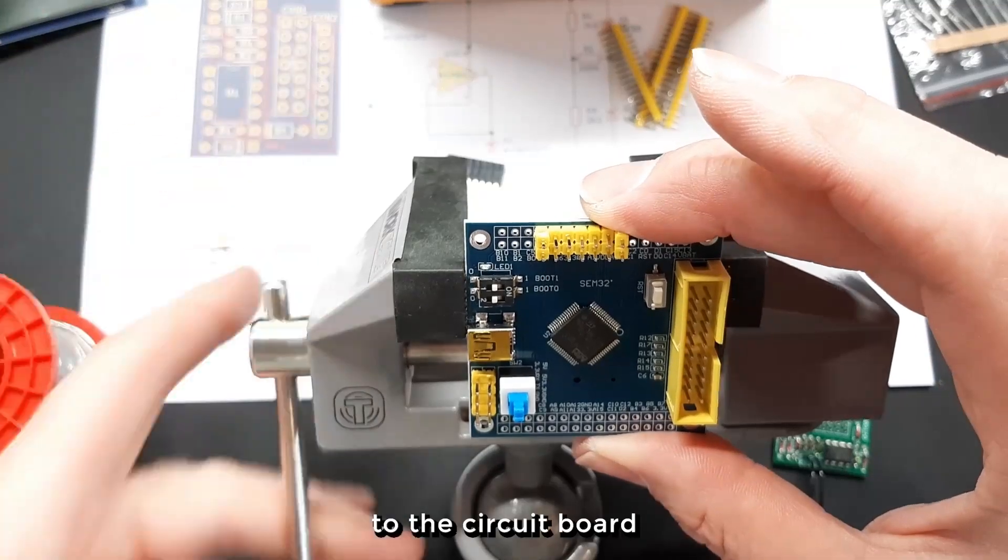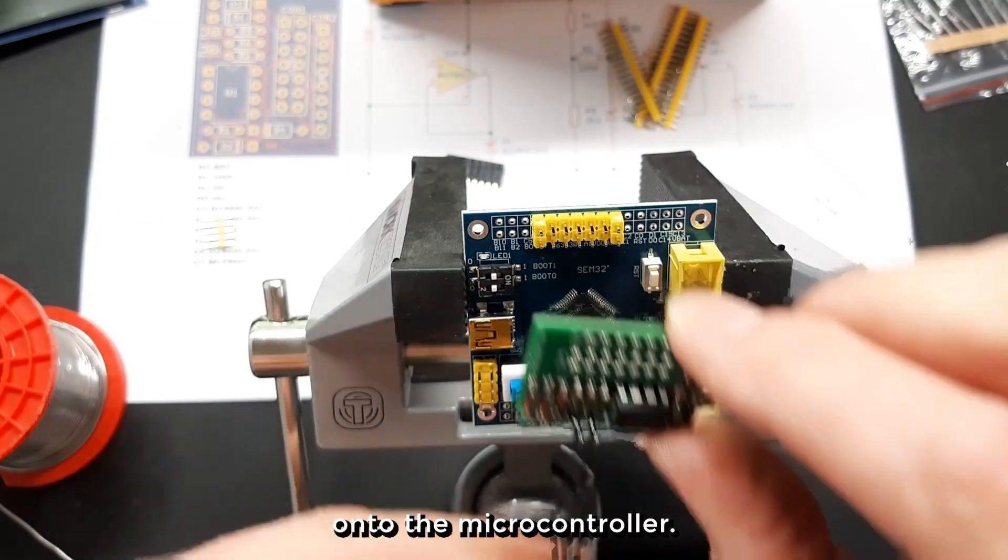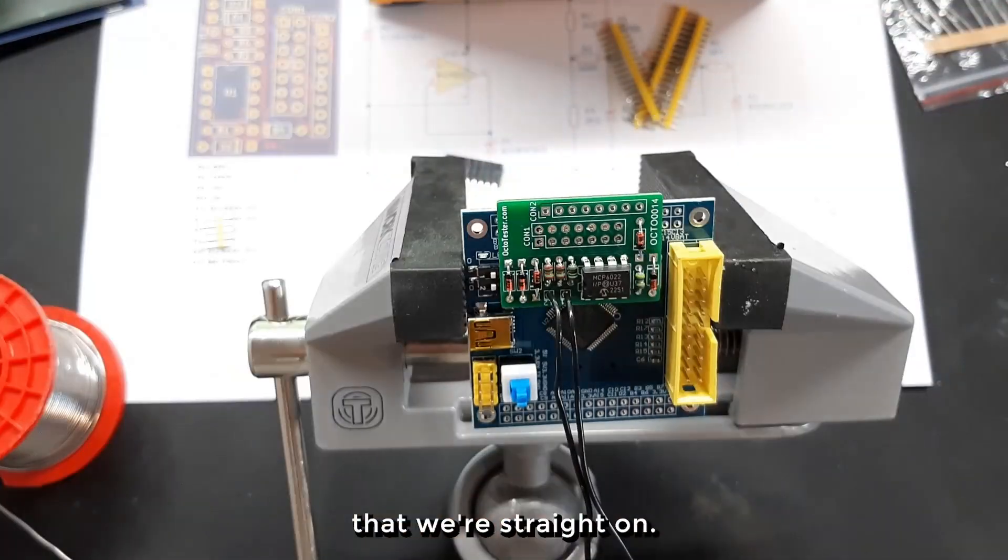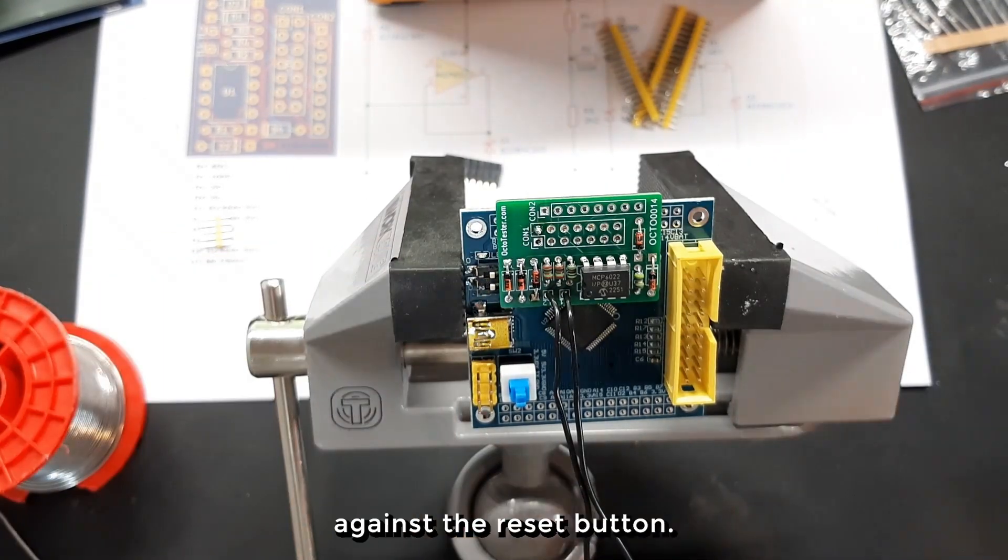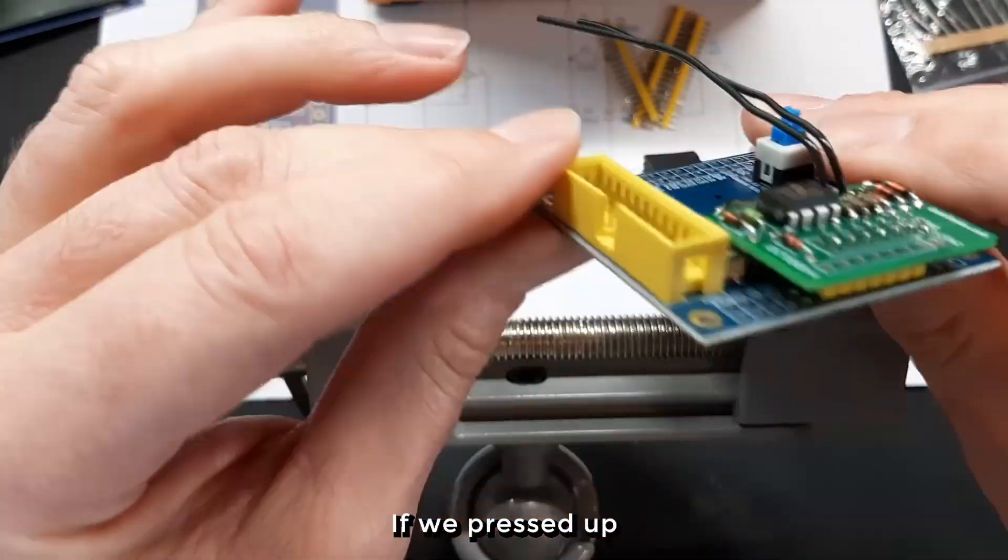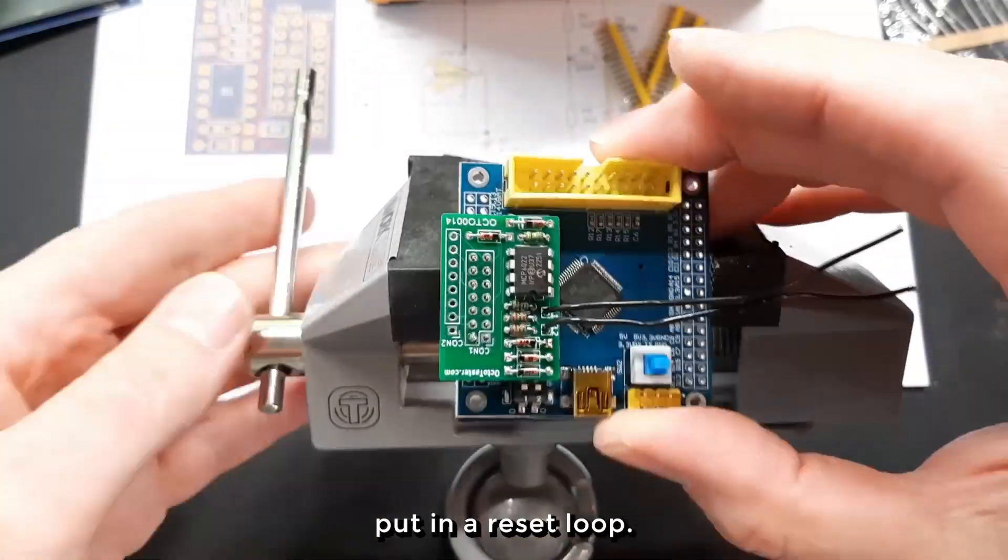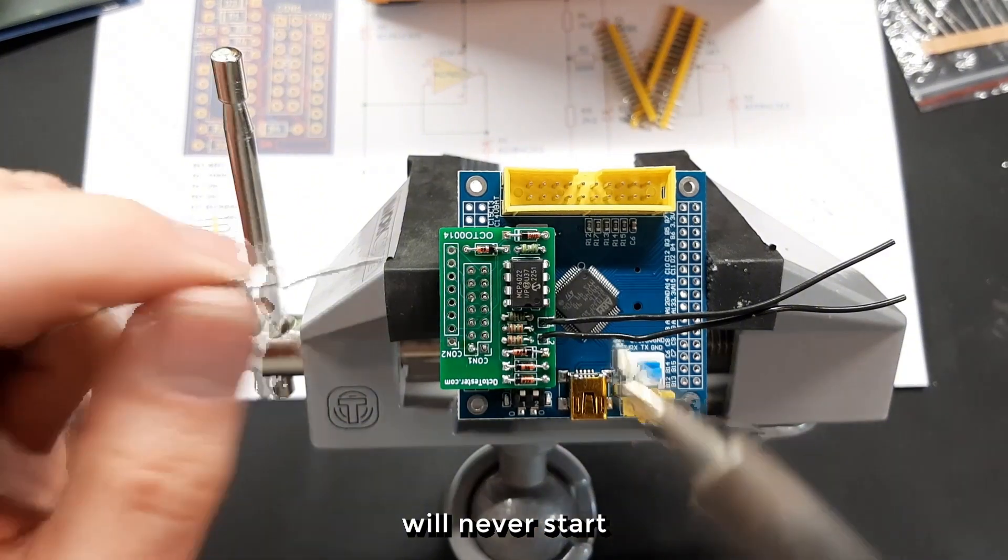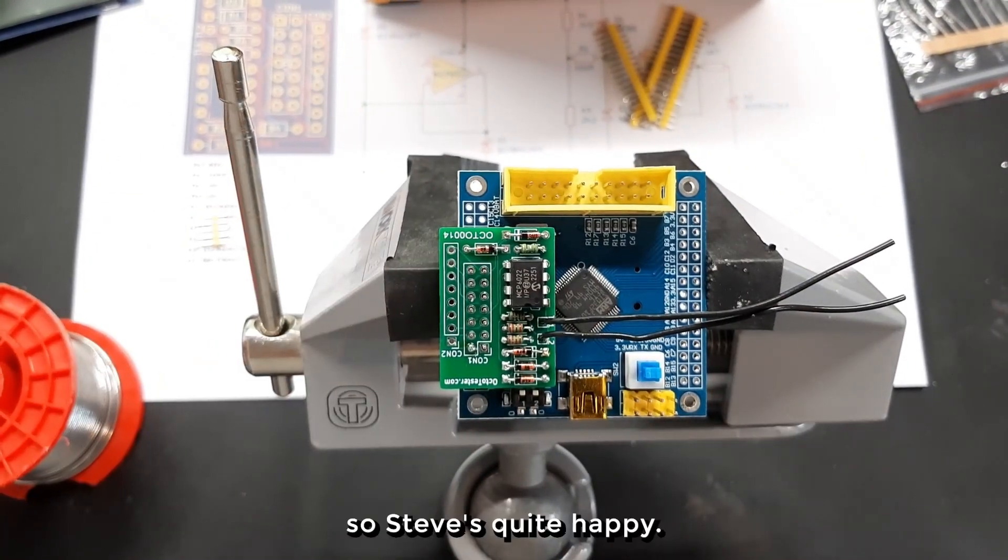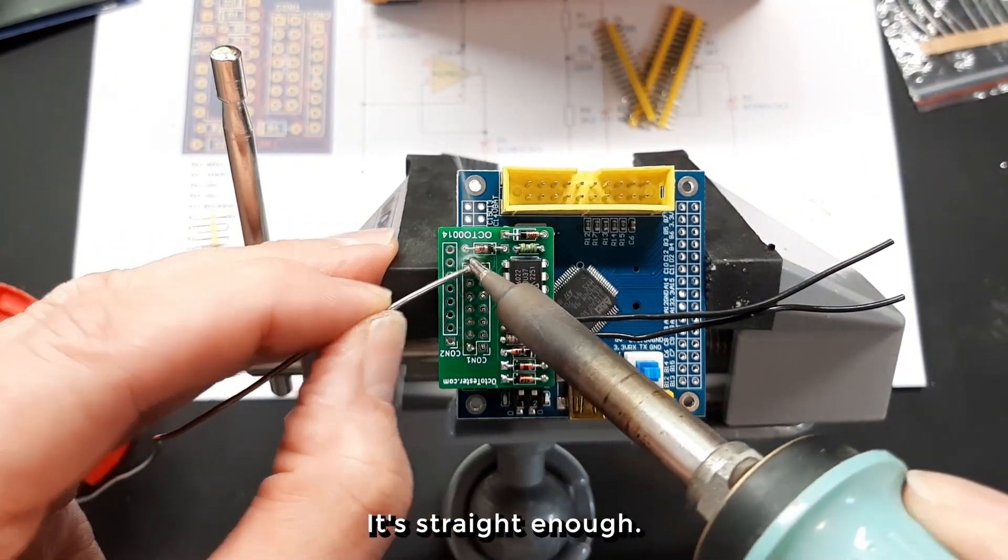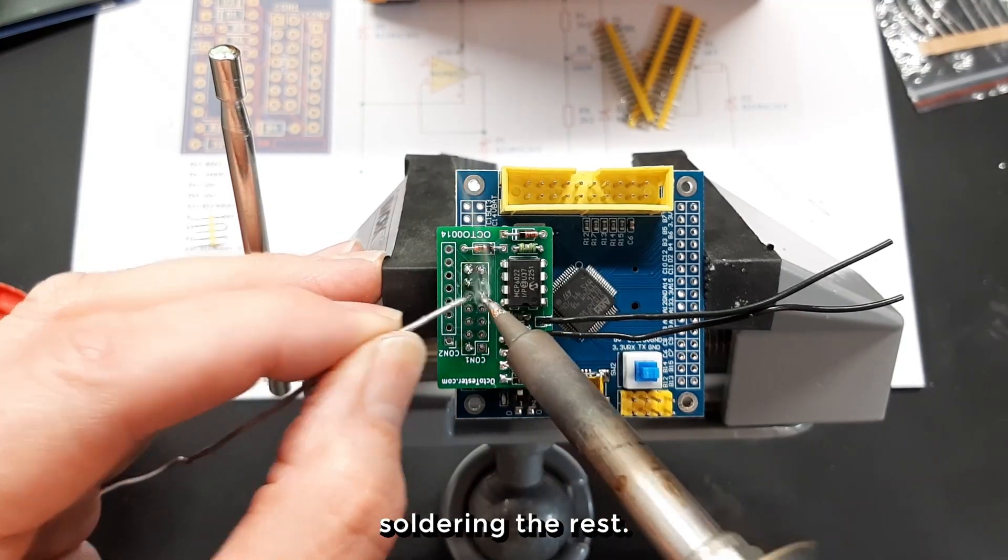Now then, when we solder the circuit board onto the microcontroller, just keep checking that we're straight on and that we're not pressed up against the reset button. If we're pressed up against the reset button, we might get put in a reset loop and our program will never start. So Steve's quite happy that it's straight enough and he carries on soldering the rest.